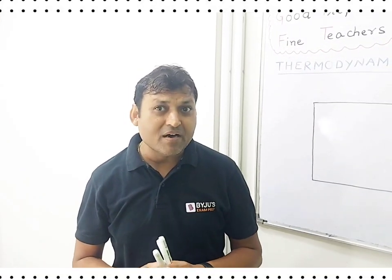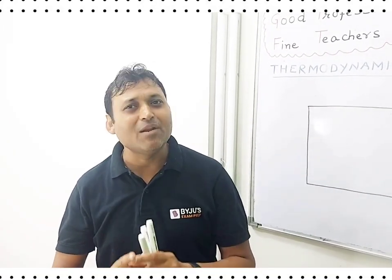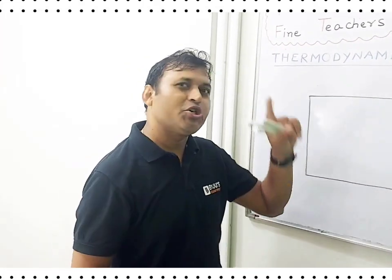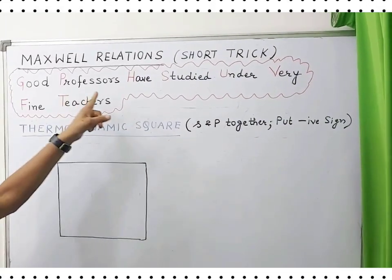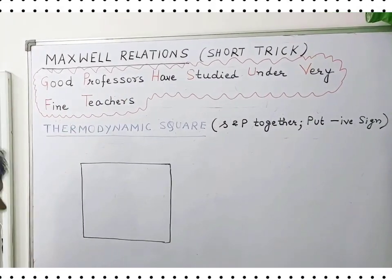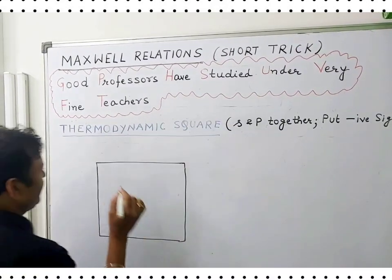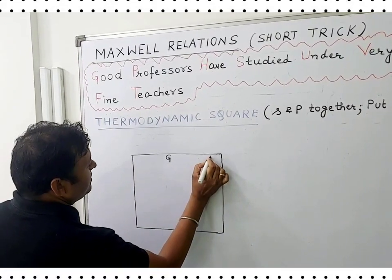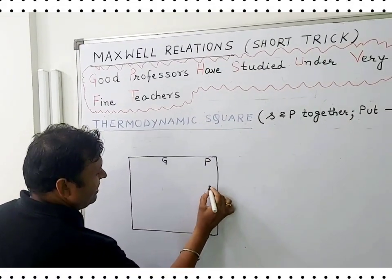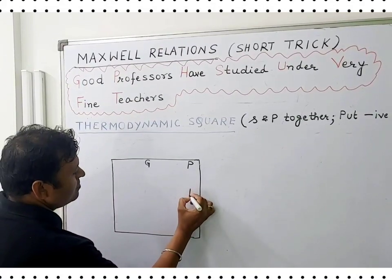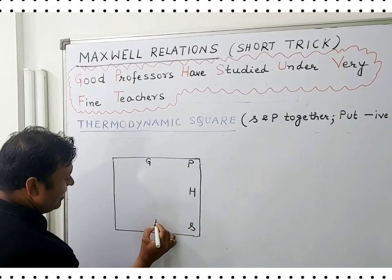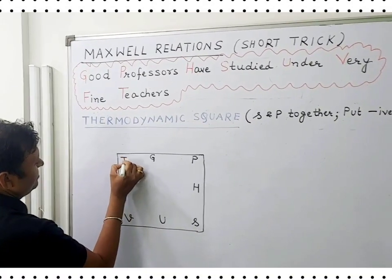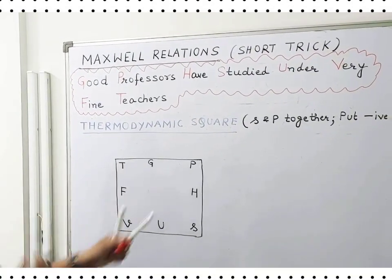Hey guys, do you remember Maxwell's thermodynamic relations? Isn't it challenging? Here is a short trick to memorize them: 'Good professors have studied under very fine teachers.' Write G here. Good, professors, then studied, then have studied, under, very, fine, teachers — this is how you can draw a thermodynamic square.